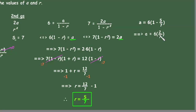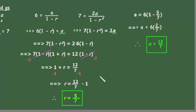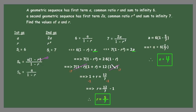Therefore the first term of our geometric sequence is a = 12/7. You can verify this by substituting back into either equation — you'll get 6 and 7 respectively. Thank you for watching, until next time, bye bye.